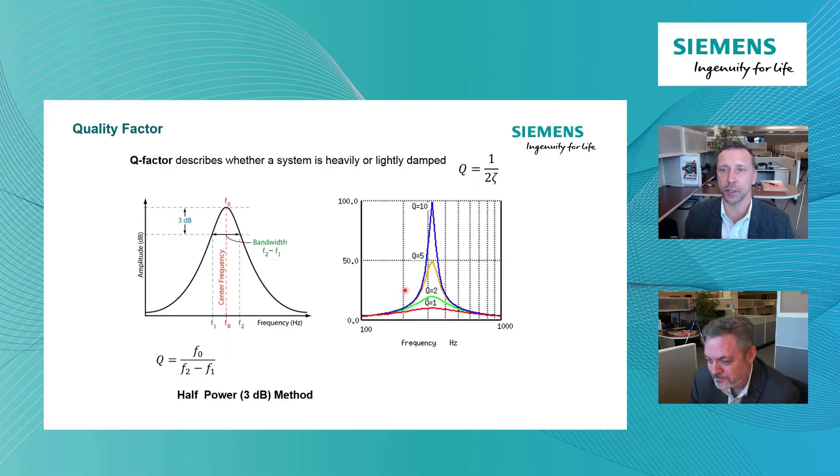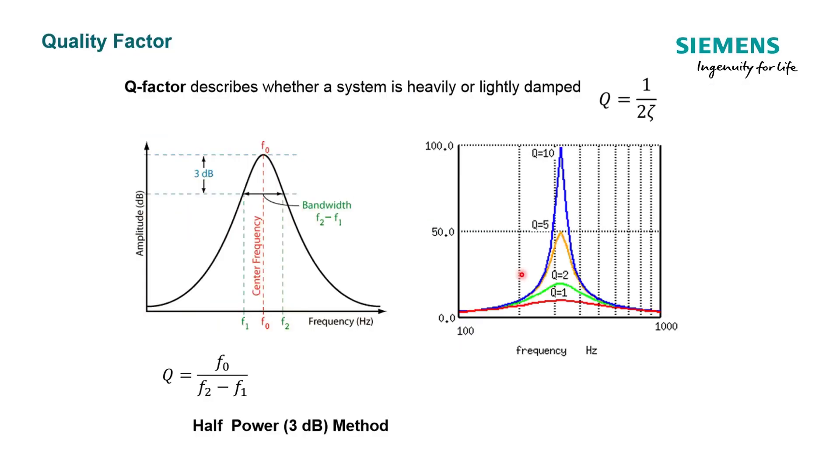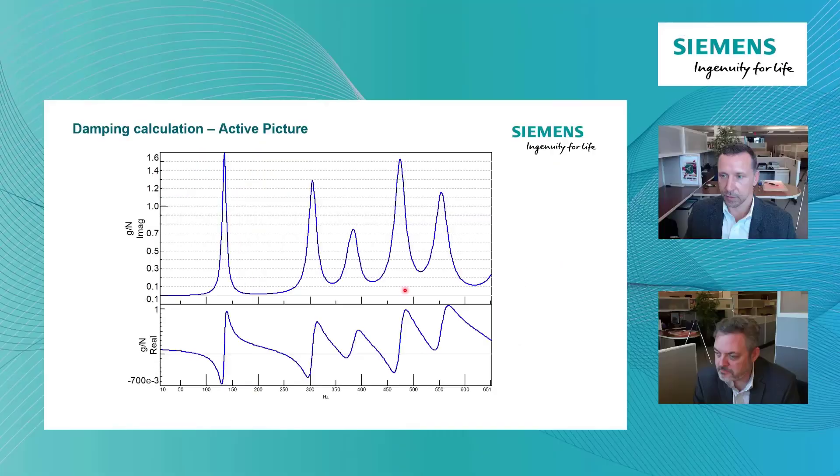So if we look at the Q factor, Q factor is one way that we can describe whether a system is heavily or lightly damped. And to determine the Q factor, that method is shown here. I can look at the peak of my resonant frequency and use this 3 dB method or the 3 dB down method to get the intersection points of F2 and F1, and then I can calculate Q. You can see that if the peak on the right-hand side is sharper, that Q value is higher, meaning it's lightly damped.